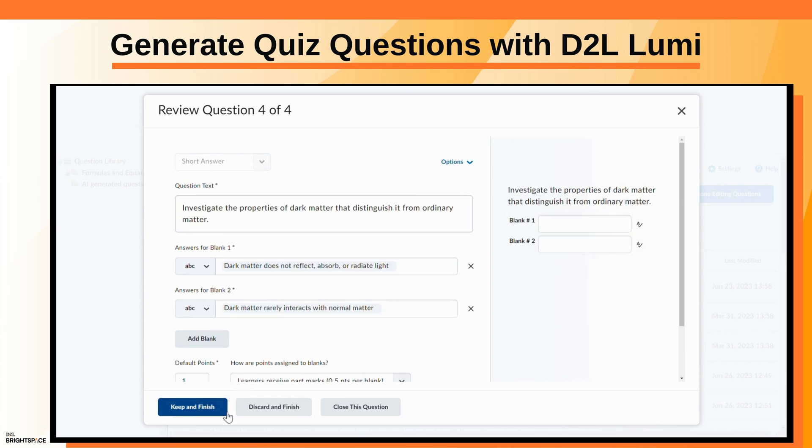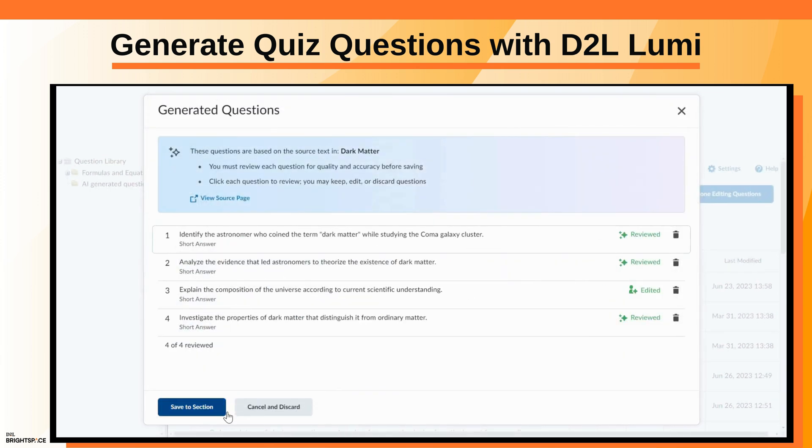Click Keep and Finish or Discard and Finish for the last question. The question status is changed to reviewed. Click Save to Section.